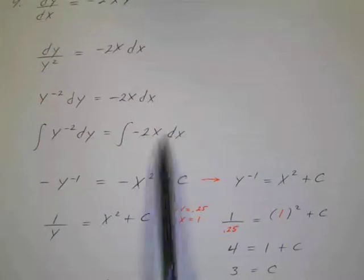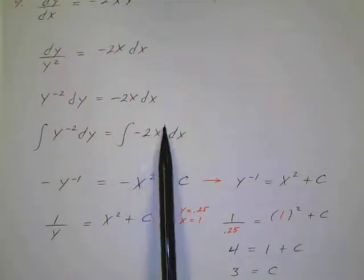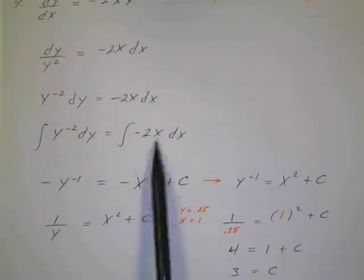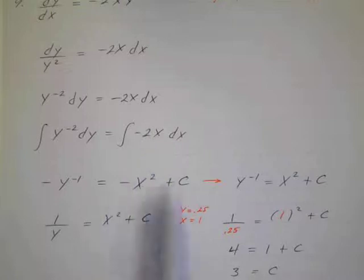And that equals, and this would be x squared over 2. Add 1 and divide by that. x squared over 2. But the 2 over 2 will cancel, so it's going to be negative x squared plus c.